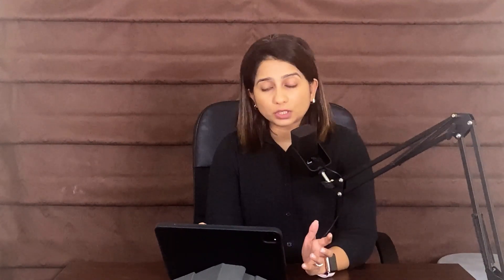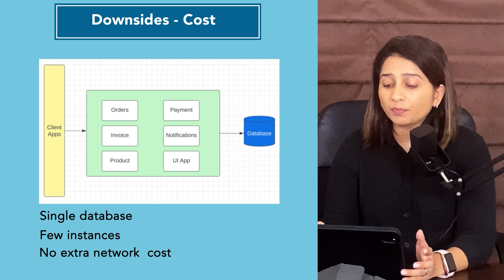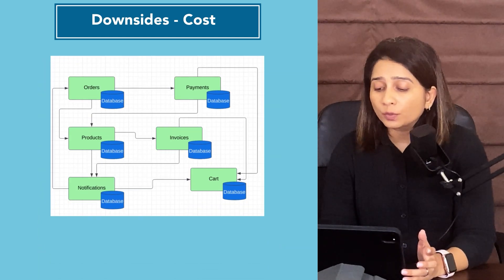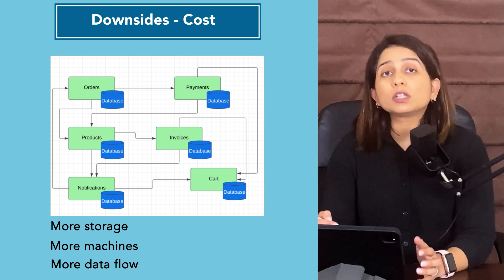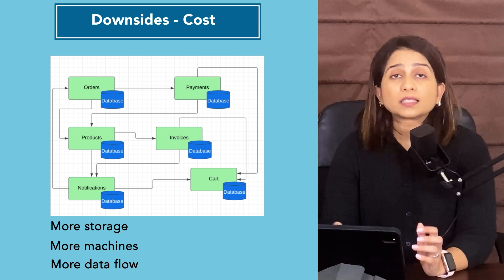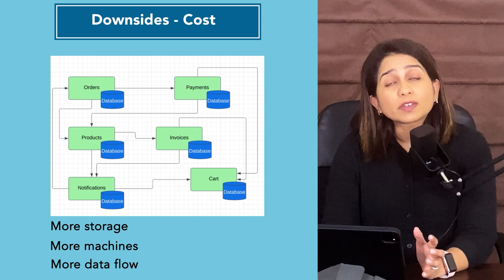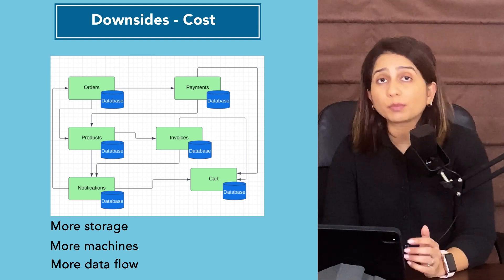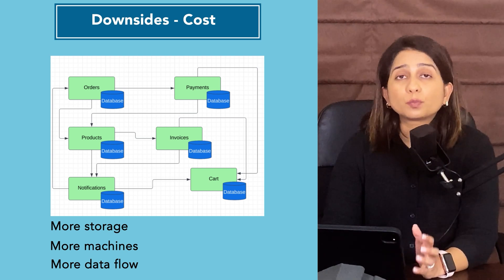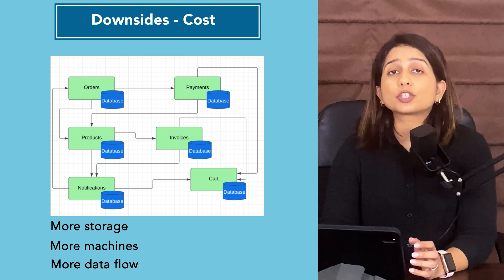Microservices architecture is not the answer to every problem, and you should be aware of its visible downsides. One of the biggest downsides is cost. With a monolith you had a single database, few instances, and no extra network cost. With microservices you need more storage, more machines, and increased network data flow — making it costly, at least at the start of migration. Since microservices is a distributed system, you must invest heavily in logging, monitoring, and tracing to make services reliable and resilient, either building these in-house or purchasing tools.